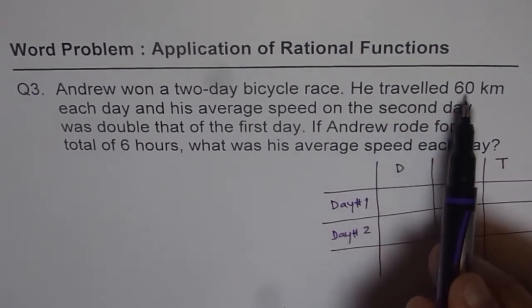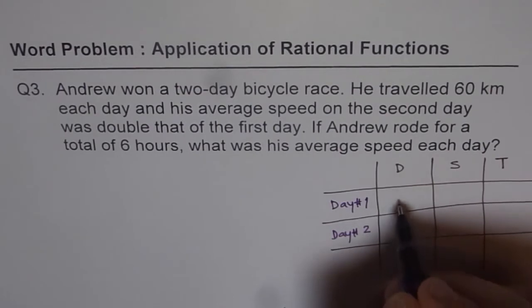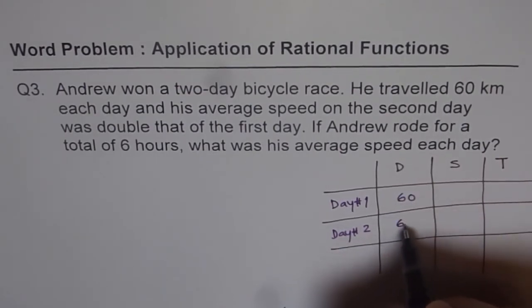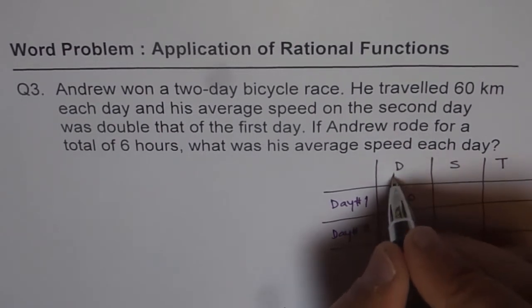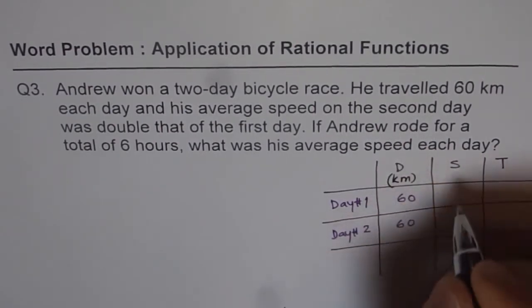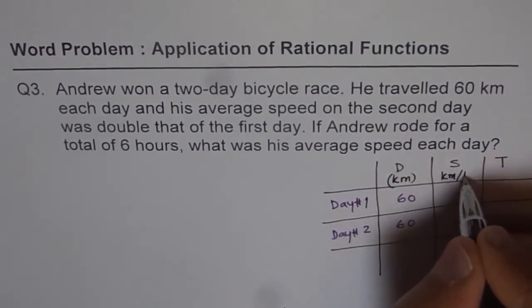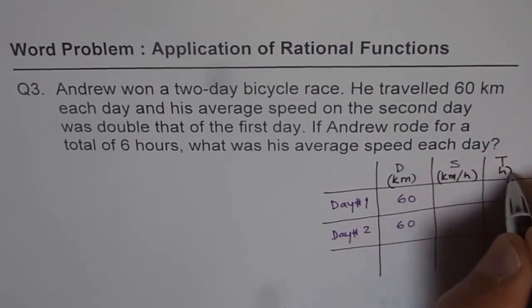Now, he traveled 60 kilometers each day means distance is 60 for each day. It's a good practice to write units. Units is kilometers for distance, speed is kilometers per hour, and time is in hours.